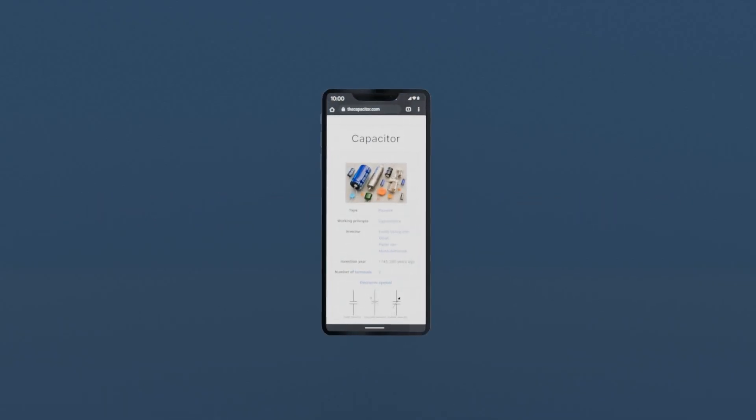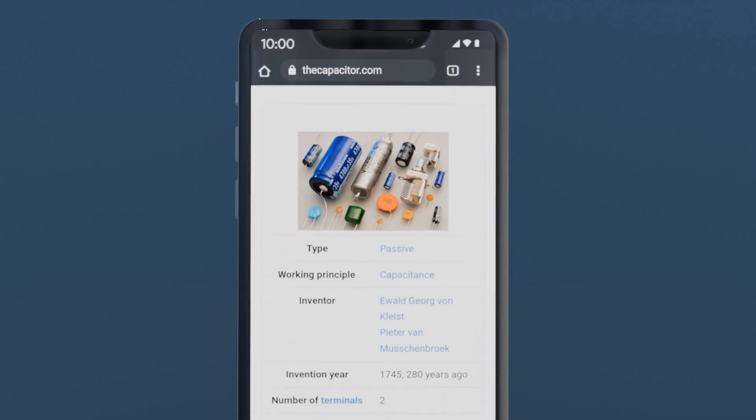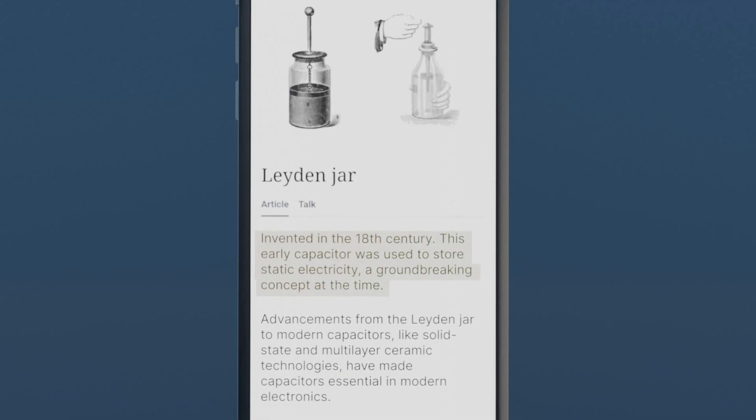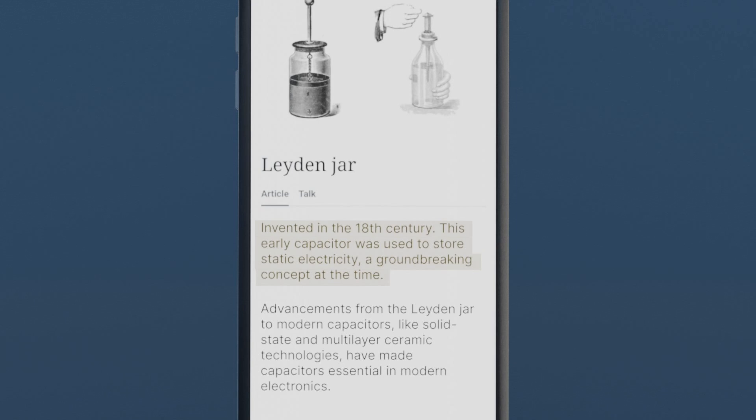Let's start with a little history. The capacitor, as we know it today, has its roots in the Leiden Jar. Invented in the 18th century, this early capacitor was used to store static electricity, a groundbreaking concept at the time.